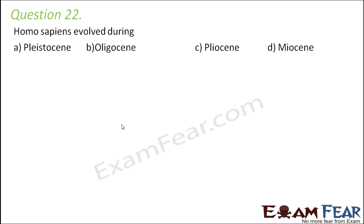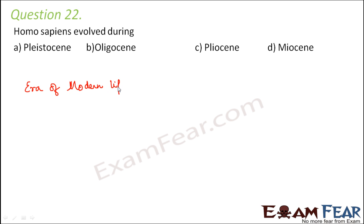Let us quickly look at the different periods of the era of modern life. There are many different eras — the era of medieval life, the era of ancient life, and the era of modern life. The era of modern life is called the Cenozoic.